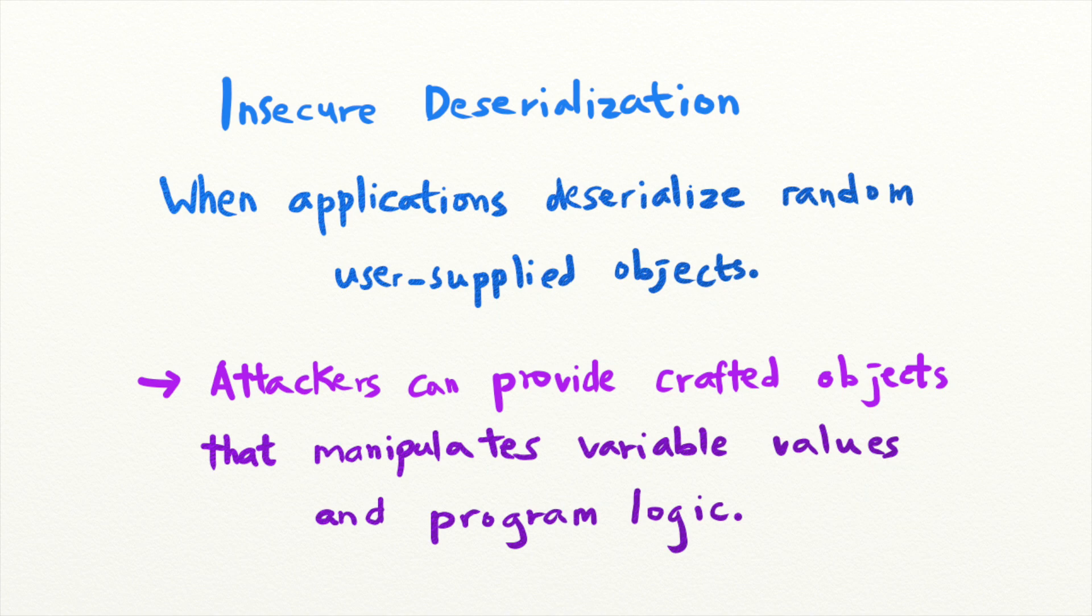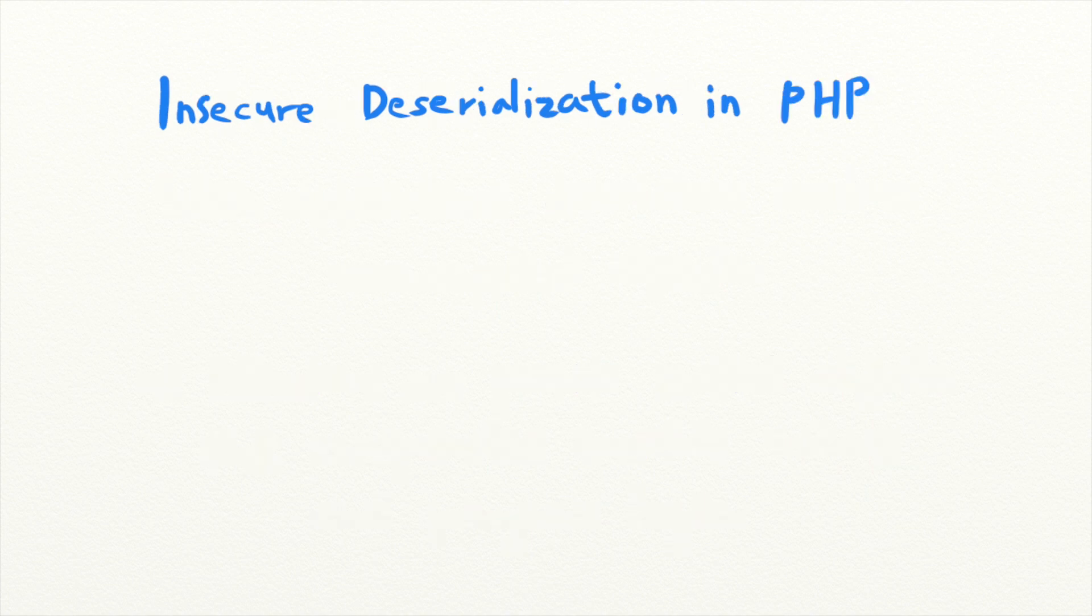To help you understand insecure deserialization vulnerabilities, let's take a look at how they manifest in PHP applications. To understand insecure deserialization in PHP, you have to first understand how PHP serializes and deserializes objects.